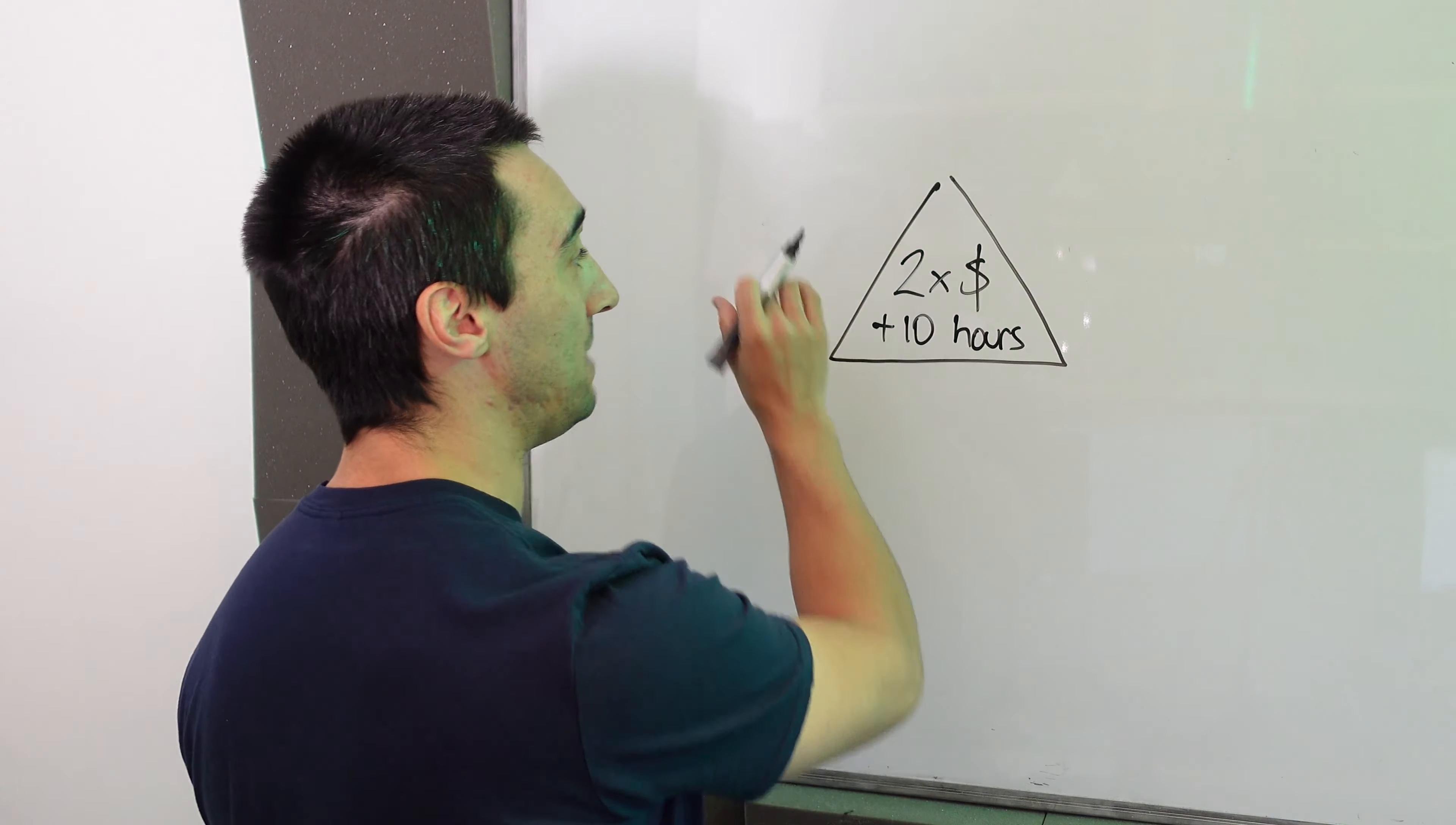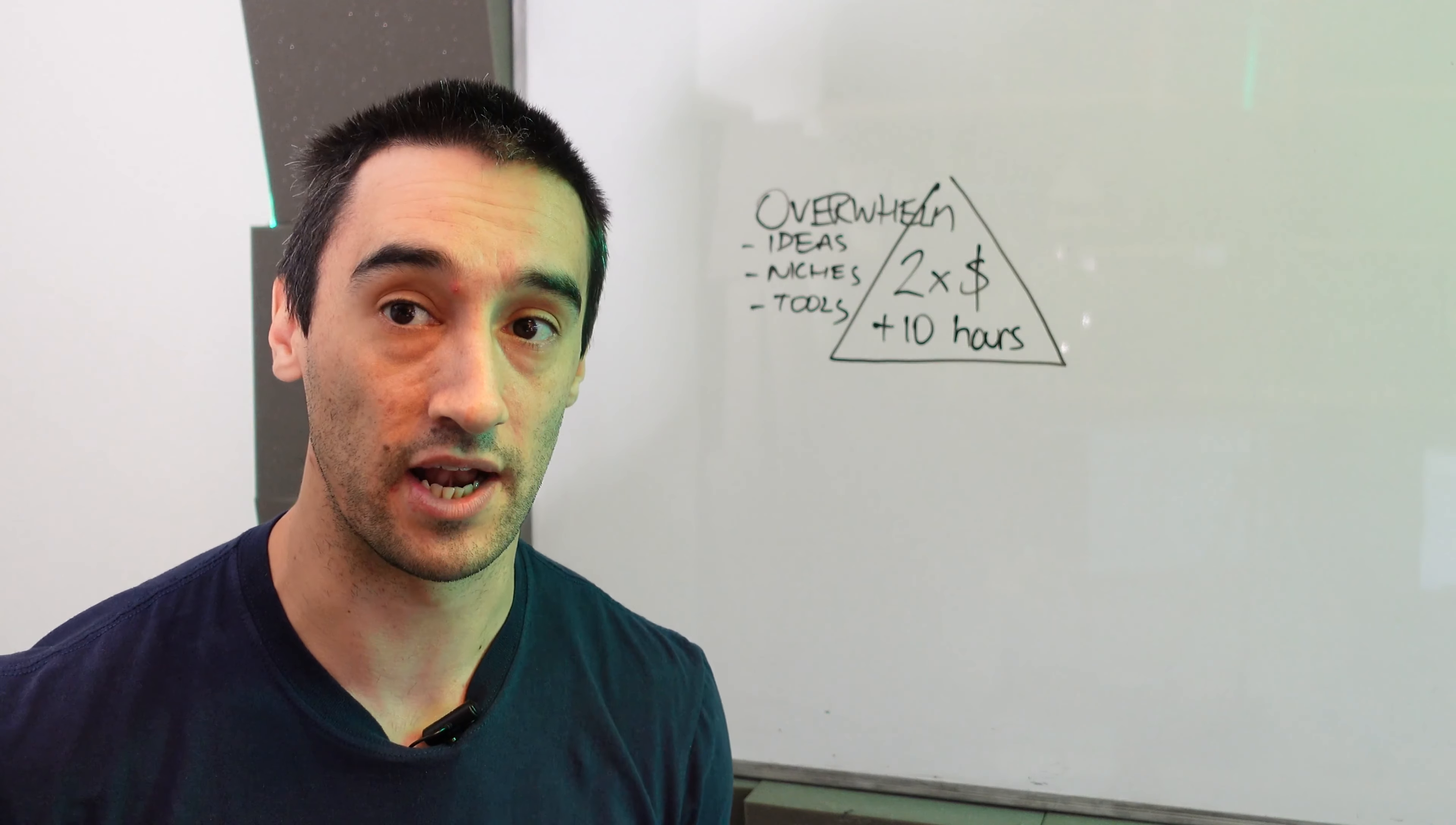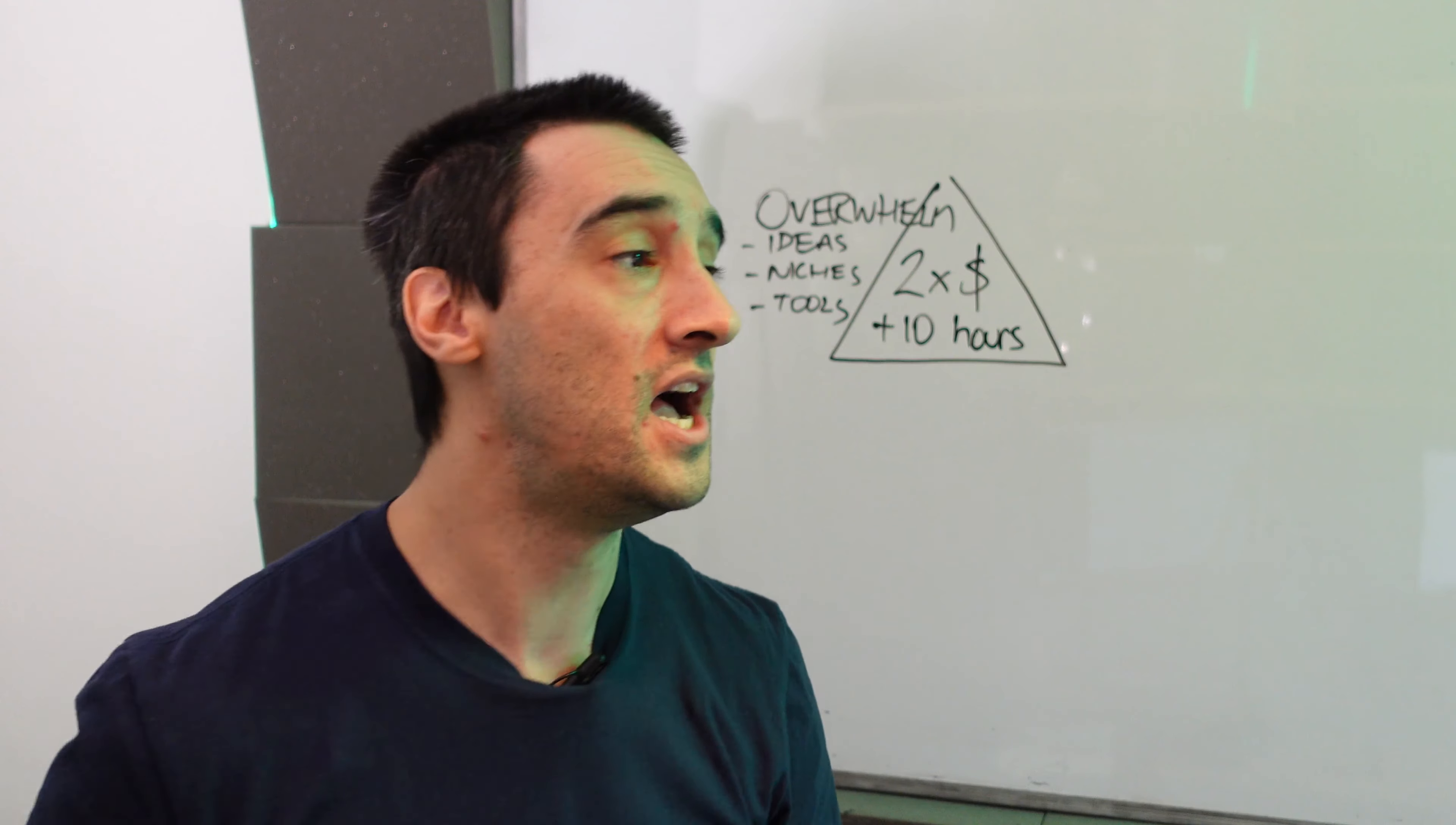The first thing that people really struggle with is overwhelm. How many times have you had new ideas, niches, tools, all of these different offers and services? One of the reasons we find typically that people struggle to double their revenue is they have way too much going on. They have too much advice. They're in loads of different Facebook groups. Some people say you should go after SEO. Some people say you should use high level and just go after reviews. Other people say, don't sell marketing funnels, sell this instead.